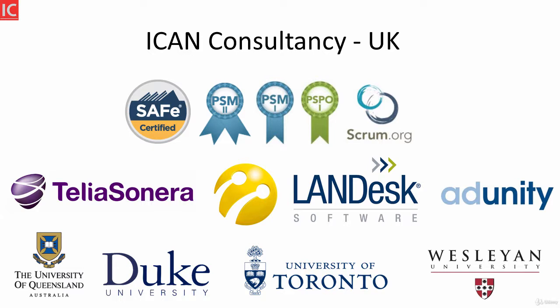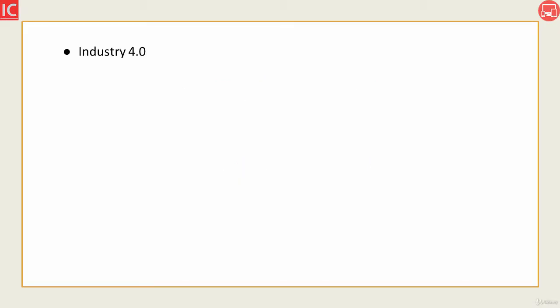In this course, we will start learning about Industry 4.0, which is one of the pillars of digital transformation. Then we will have a quick look at Society 5.0, because it will impact the scope of the digital transformation projects you will be running, especially for the government and public sector.